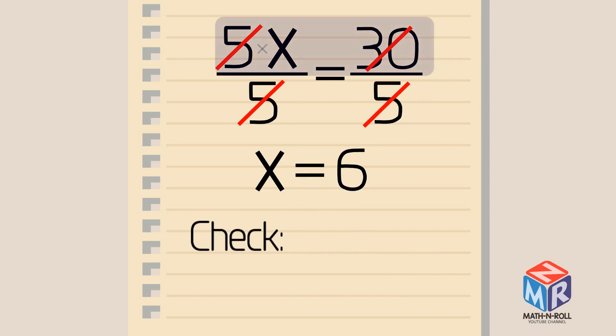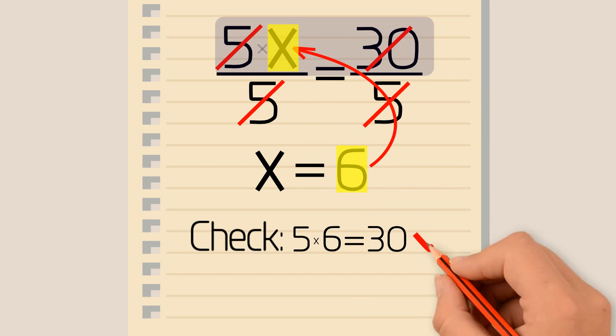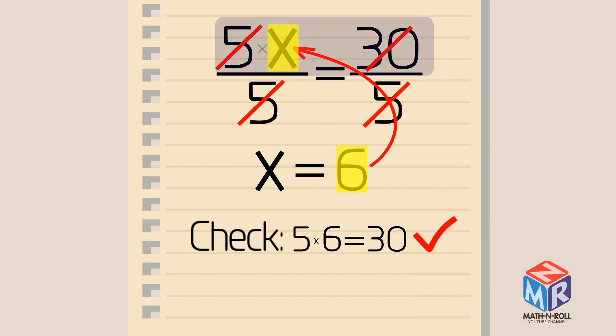Let's check our work by plugging in 6 for x. 5 times 6 equals 30, so our answer is correct.